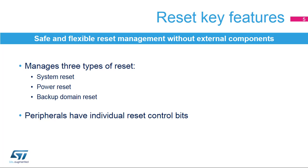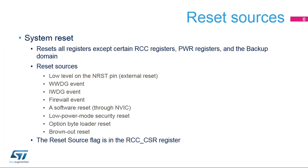The peripherals have individual reset control bits. The first type of reset is the system reset, which resets all the registers except certain registers for the reset and clock controller and power controller. It also does not reset the backup domain. The system reset sources are the external reset, generated by a low level on the NRST pin, a window watchdog event, an independent watchdog event, a firewall event, and a software event through the nested vectored interrupt controller.